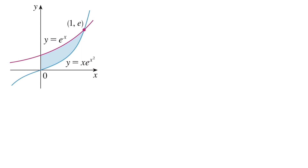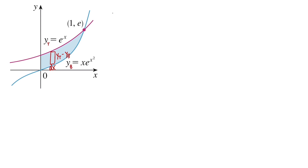Now we find the area between two new curves. The first one is e to the x, and the second one is x times e to the x squared. We want the region from x equals 0 to x equals 1. On this interval e to the x is above the other one, so we use a vertical rectangle approach. The base is just a little bit of x, denoted dx. The top function is e to the x, so the height is yt minus yb.